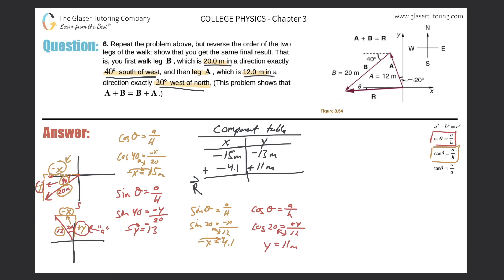Now all we have to do is sum them up. When I add the x components together, I get negative 19.1, but due to significant figures this becomes negative 19. When I add the y components, I get negative 2. These are the components of the resultant. To draw the resultant: draw your axes, move negative 19 units to the left, then move down 2 units. The resultant vector is the distance from start to end, and this angle is what we solve for in terms of direction.